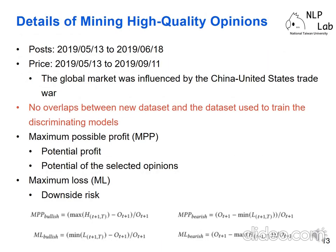After training the discriminating models, we use a separate dataset with no overlap with the training data to show whether the proposed idea can mine high-quality opinions. We use two metrics to evaluate the results. The first is Maximum Possible Profit (MPP), which shows the potential profit of an opinion — that is, if we trade based on the high-quality opinions sorted out, what is the maximum profit we can gain. The other metric evaluates downside risk, which we call Maximum Loss (ML).